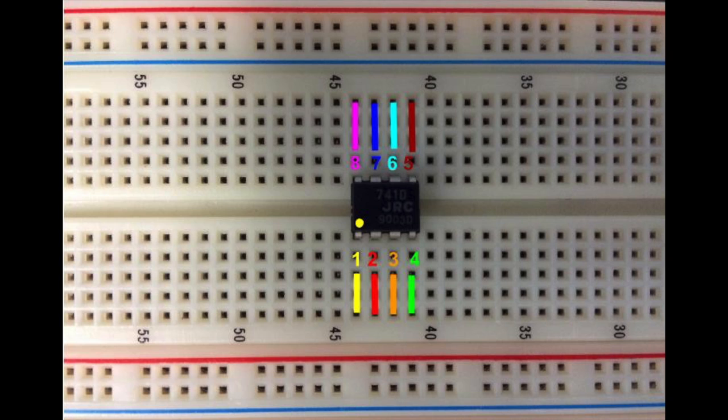This also holds true for the opposite side of the chip. Take special notice of the pin numbering 5, 6, 7, 8 as it wraps around the chip. The pin numbering is important because it's directly reflected in the datasheet of the chip.